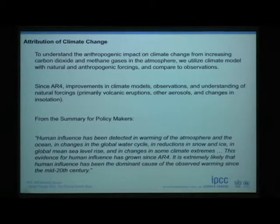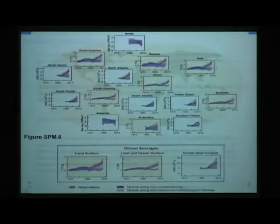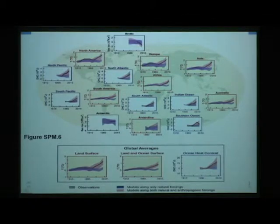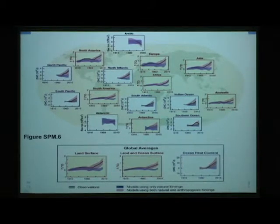And then we run the model where we add the greenhouse gases, the CO2 and the methane. Here is a plot showing temperature, ocean heat content — basically temperature and ocean heat content in various land masses, various ocean basins, and then the global average.